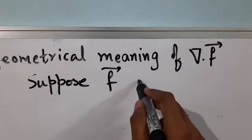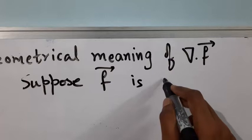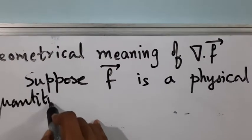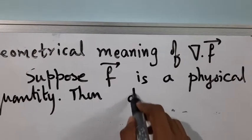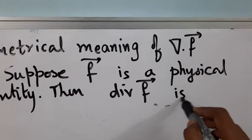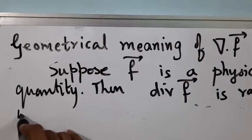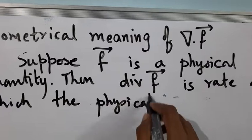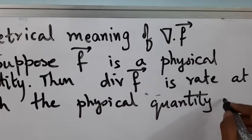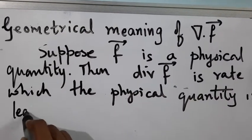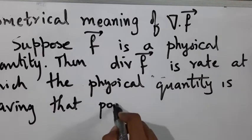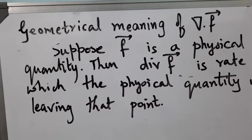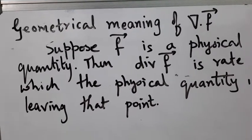Suppose f is a physical quantity. Then divergence of f is the rate at which the physical quantity is leaving that point, and hence it is no surprise that the name is divergence — something that is leaving.